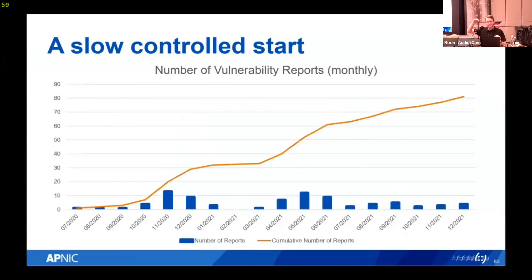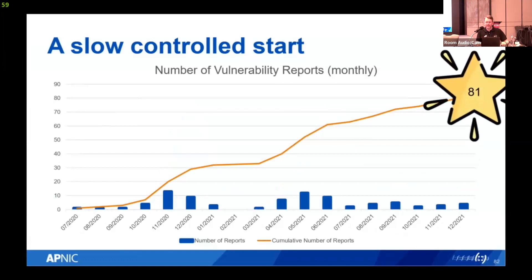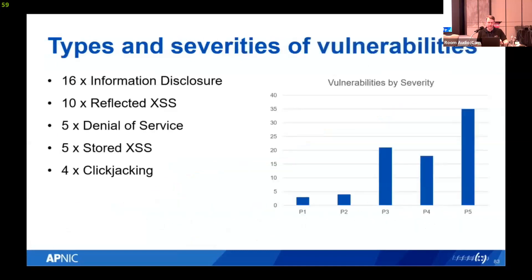If we track that cumulatively — the orange line — we can see that over just over a year, one year and a few months, we ended up with 81 unique validated vulnerability reports. Breaking it down by severity: P1 is the highest, P5 the lowest. We received a small number of critical P1 reports and a large number of very low severity reports, which is how you'd expect to see it.